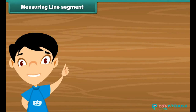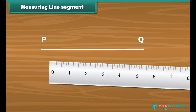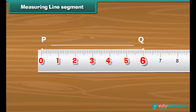Measuring a line segment: Let us measure a line segment with the help of a centimeter scale. Draw a line segment with its endpoints as P and Q. Place the zero end of the scale exactly below point P. See where point Q lies on the scale. Q lies on number 6. Between 0 and 6 there are 6 cm, so the length of line segment PQ is 6 cm.